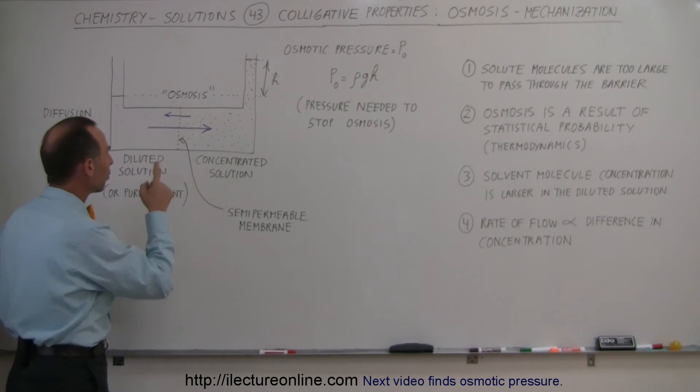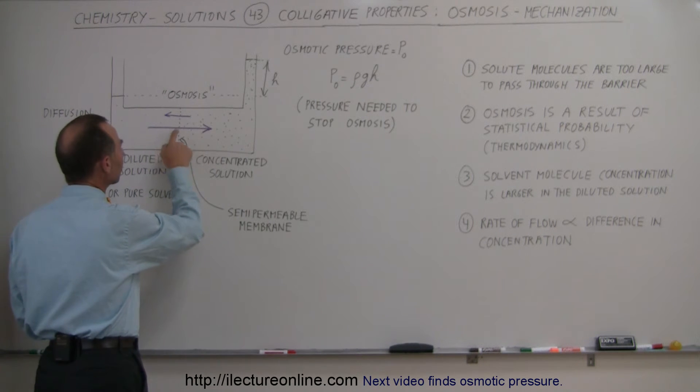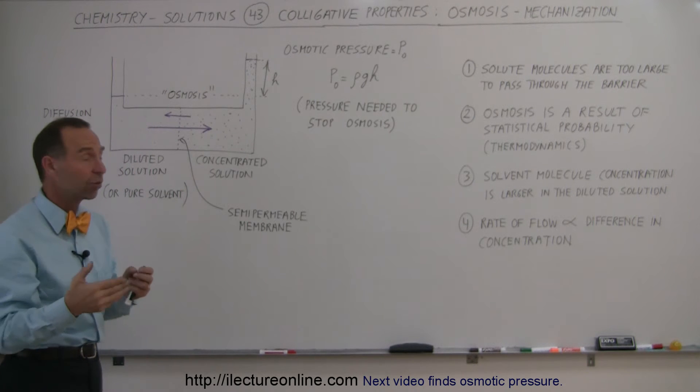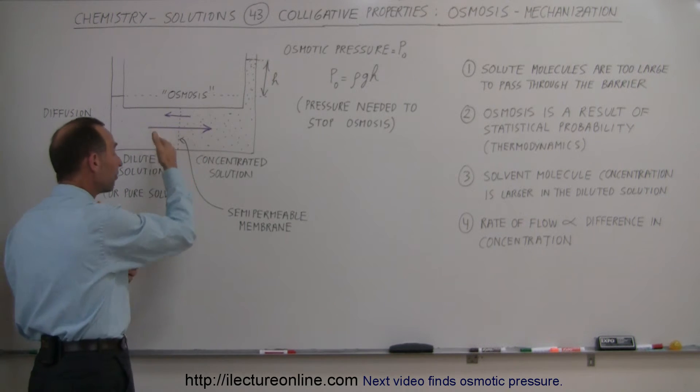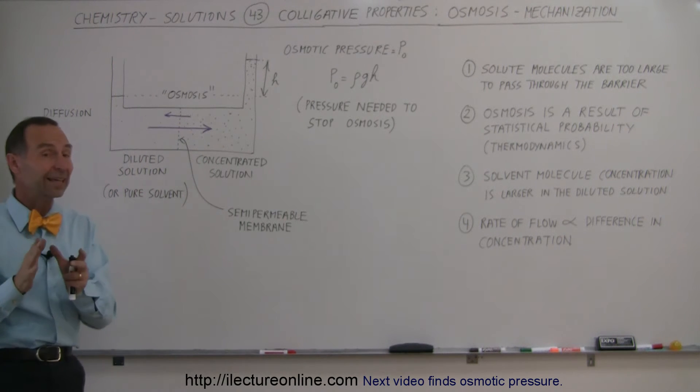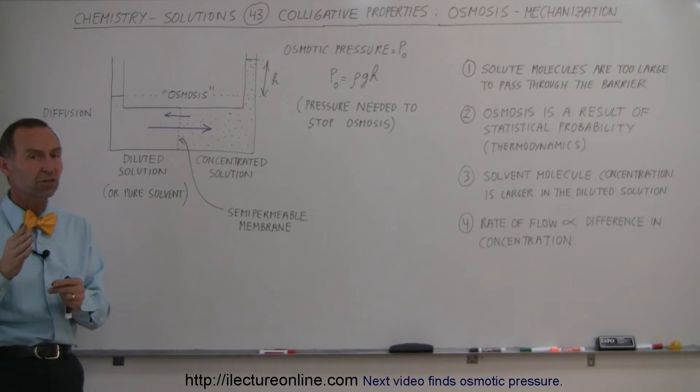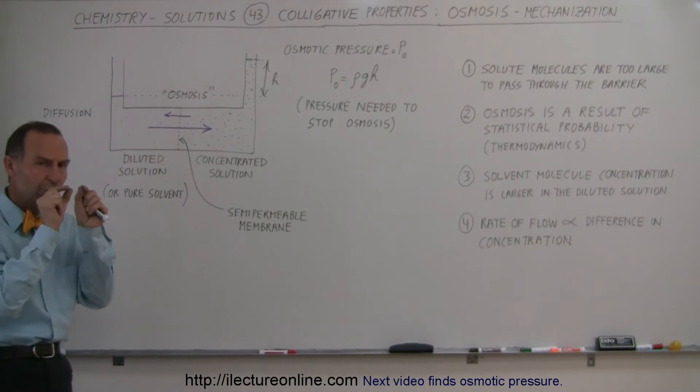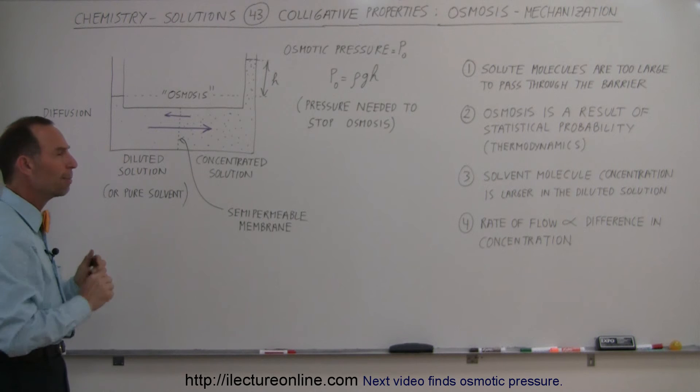...there's a statistical chance that a water molecule will go from the left side to the right side, and there's a statistical chance that a water molecule will go from the right side to the left side. Of course, that's not the case for the solute molecules, but it is the case for the solvent molecules, which are small enough to make it through the membrane.